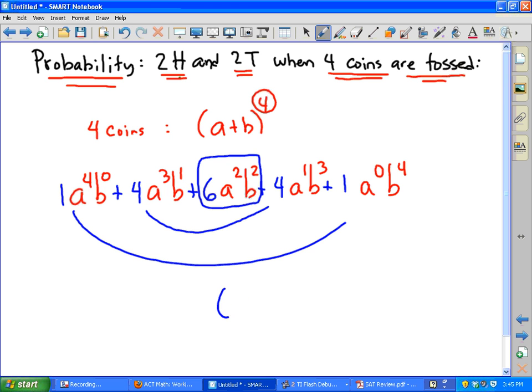So the probability, you're going to have six, and then A is going to be one-half squared, and B is going to be one-half squared. So you're going to have six times one-fourth times one-fourth. That's six over 16, which is three out of eight.